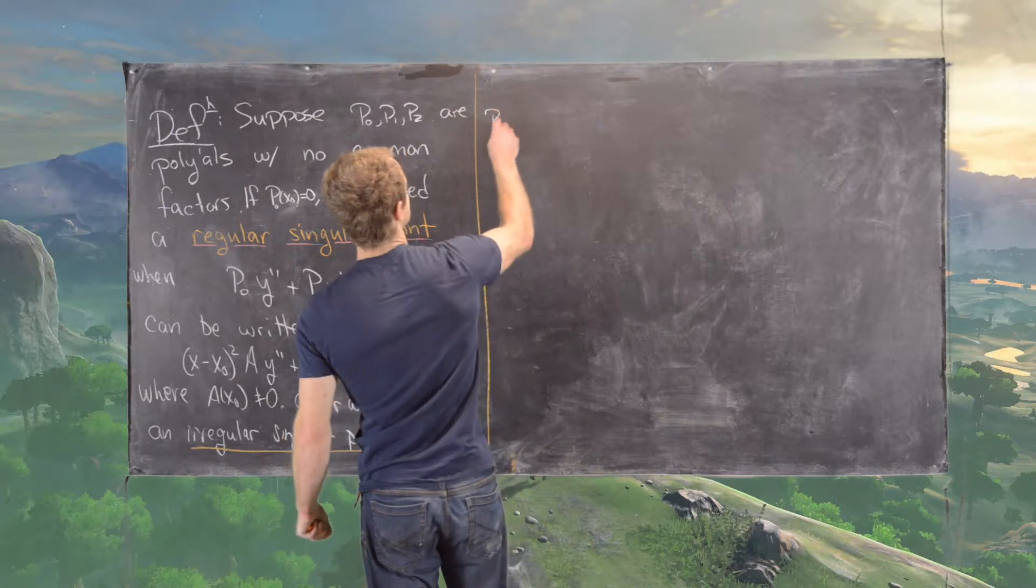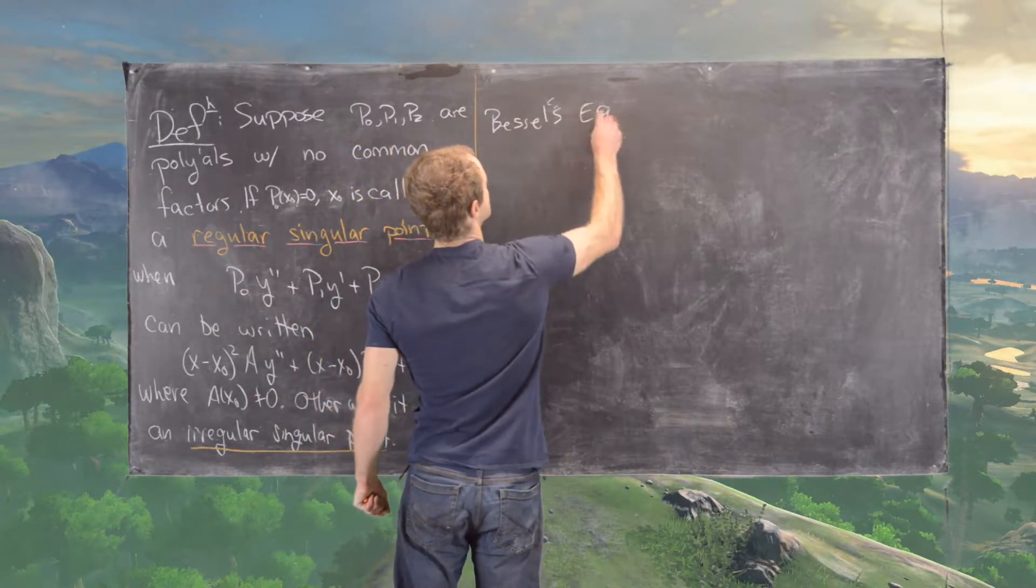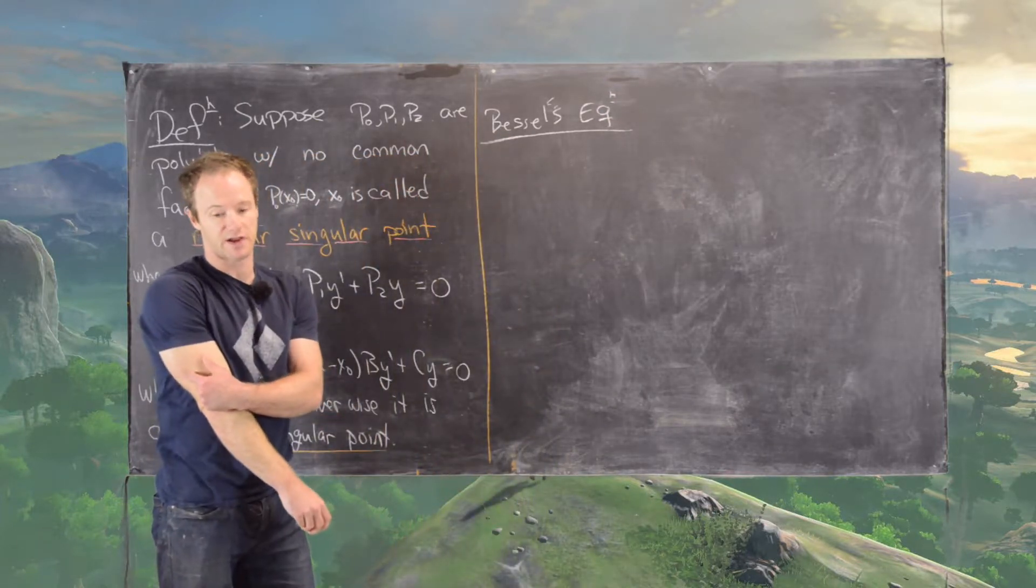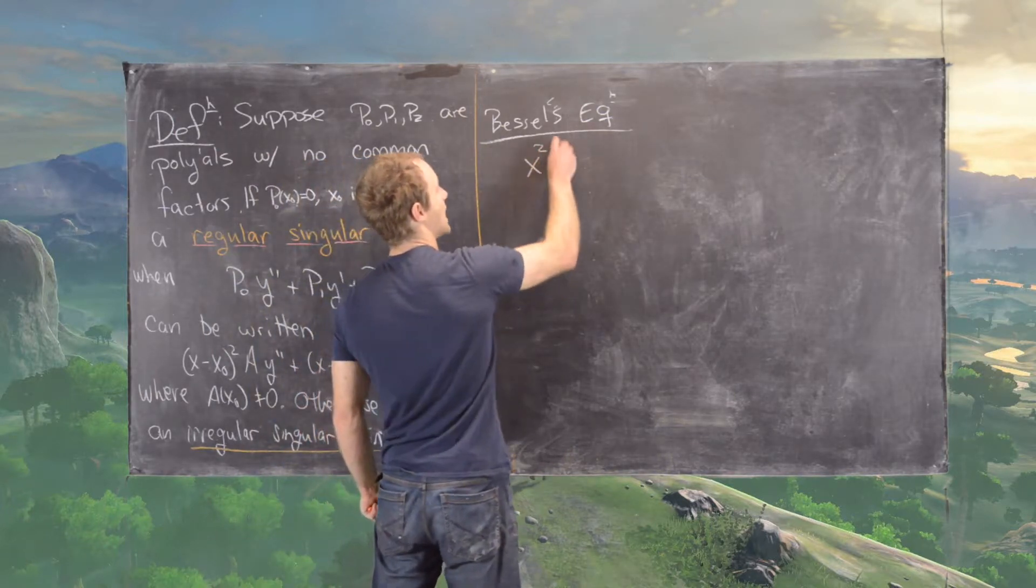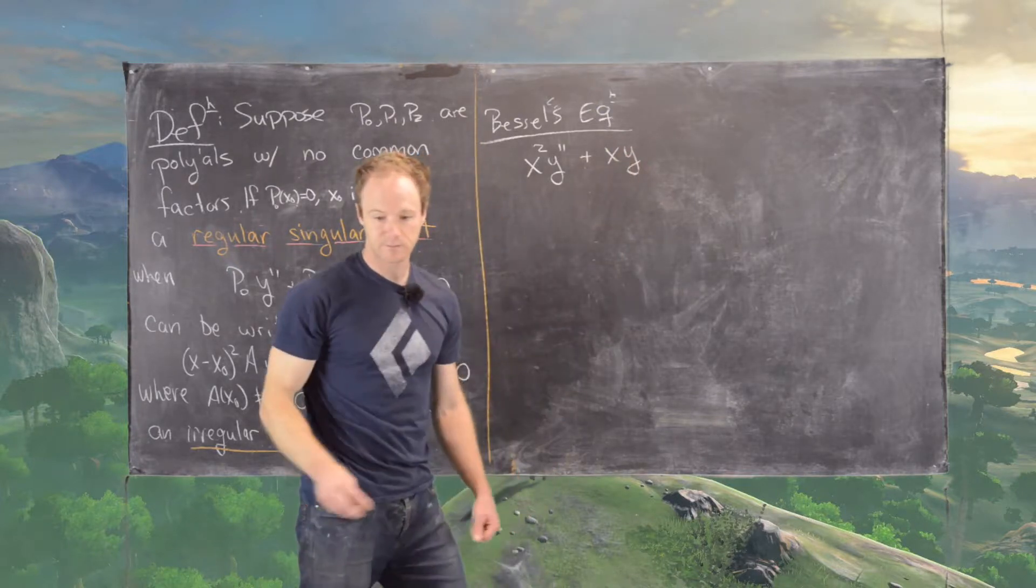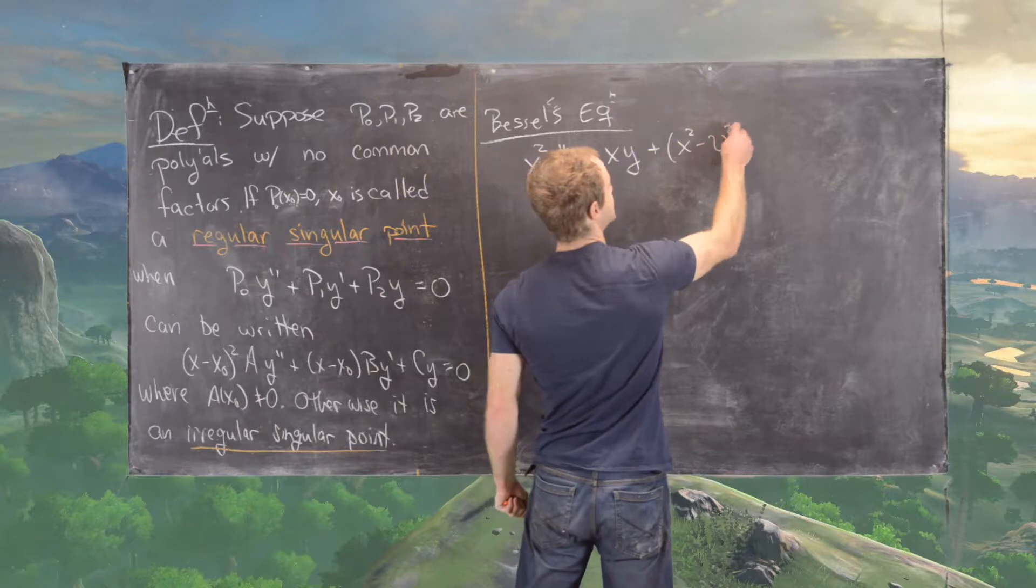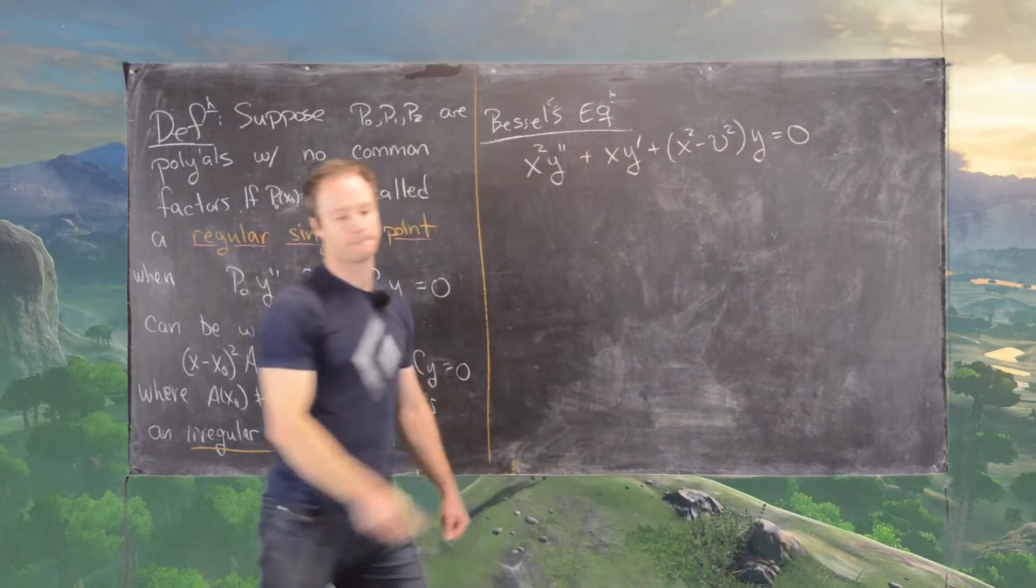One of them is something called Bessel's equation. So this is an example of an equation with a regular singular point and it looks like this: x squared y double prime plus x times y prime plus x squared minus nu squared y equals 0.